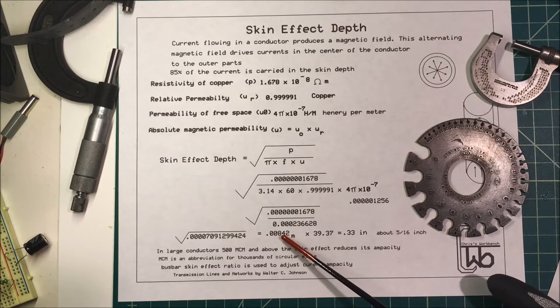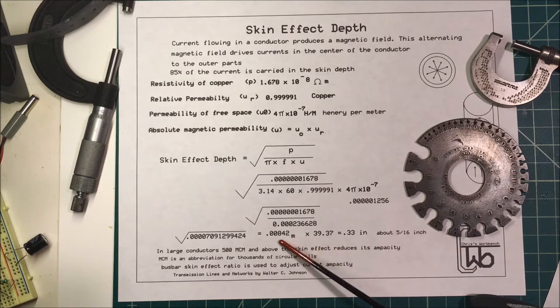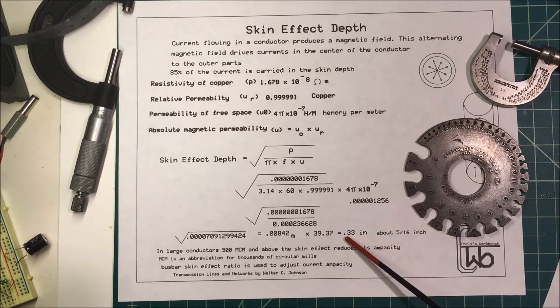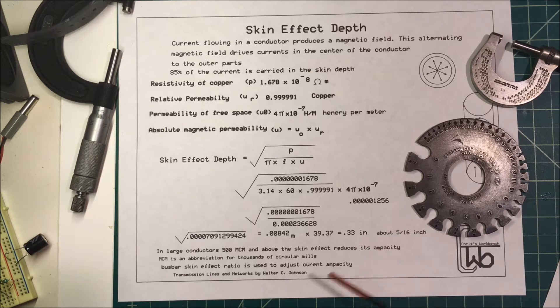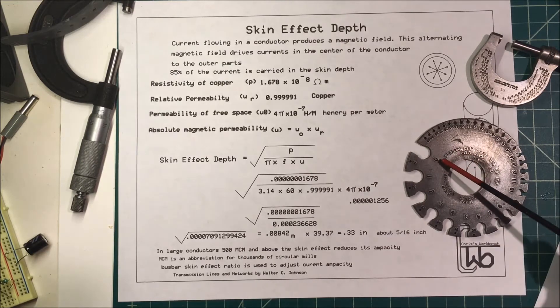To convert meters to inches, we multiply by 39.37, the number of inches in a meter. If we do that we come up to about a third of an inch, 0.33 inches. That's about 5/16ths of an inch. It's about the size of a 1-0 wire.